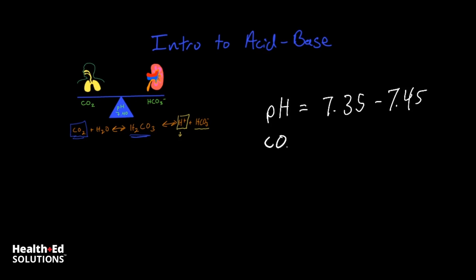Then you also want to look at the CO2, or the partial arterial pressure of CO2, with normal values between 35 and 45 millimeters of mercury. And if you have higher than 45, you're going to be relatively acidic. If you have less than 35, you're going to be relatively basic.